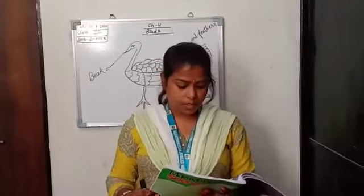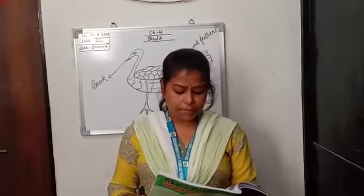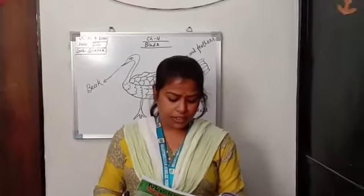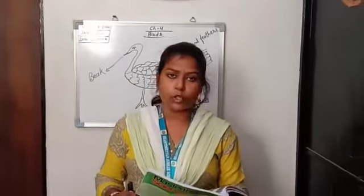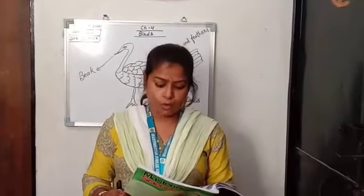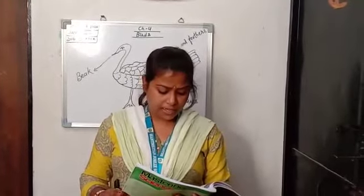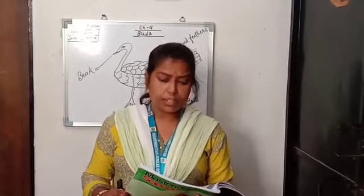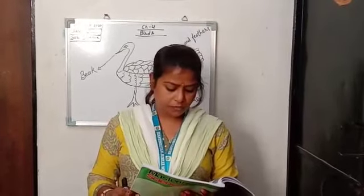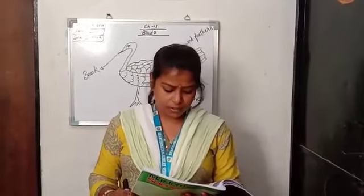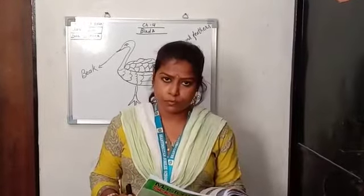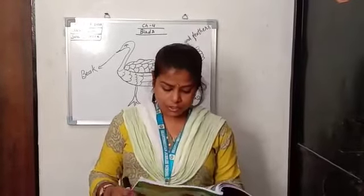Next, claws. Birds have two feet. Each foot usually has four toes, three facing forward and one rearward. Birds use their feet to walk, hop around and to hold their food.